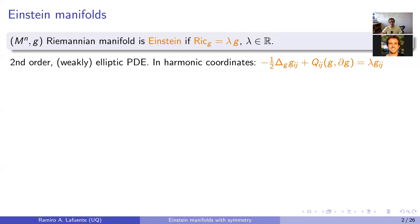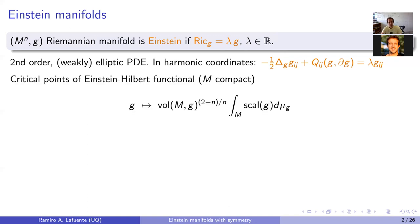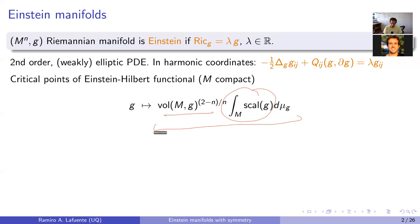From a geometric point of view, there's a very natural characterization of Einstein metrics as critical points of the Einstein-Hilbert functional on a compact manifold. You consider the total scalar curvature normalized to be scale invariant, and the critical points are precisely Einstein metrics. This variational point of view is very useful — in certain cases one can construct examples by exploiting this variational principle.